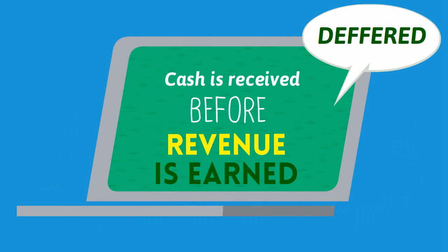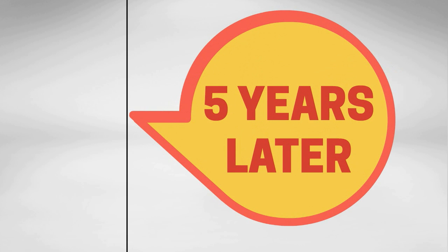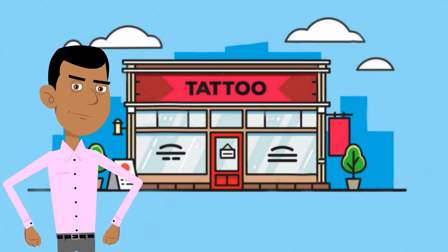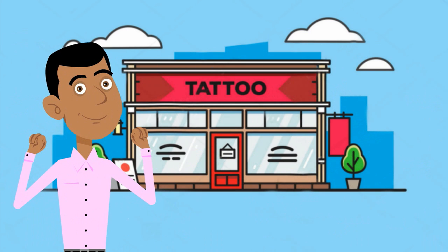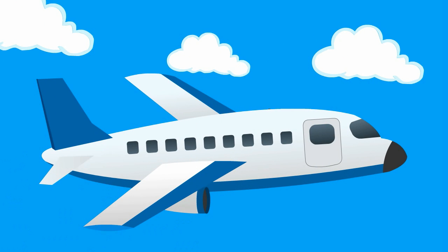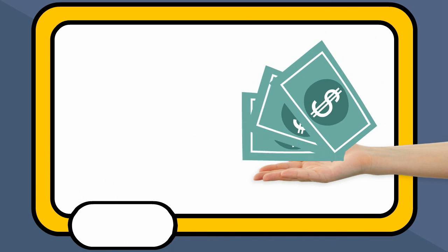Let's take a look at another example. It's 5 years later and Kanye is now older, richer, and a lot more egotistical. On the 1st of November, he walks back into the tattoo parlour and demands that they give him an on-the-spot tattoo. They give him the tattoo, however he conveniently left his wallet in his private jet. Kanye promises to pay the parlour at a later date. On the 1st of December, Kanye's payment is received for the amount of the tattoo received one month earlier.